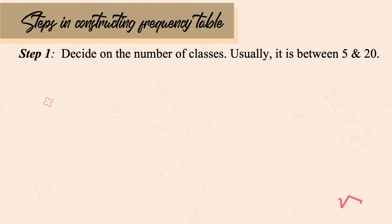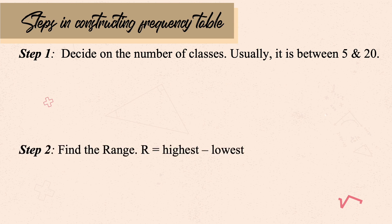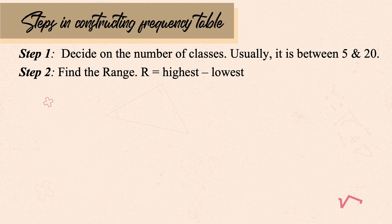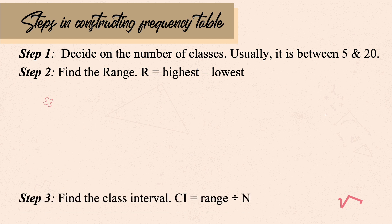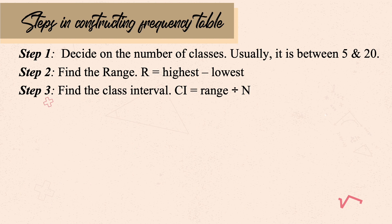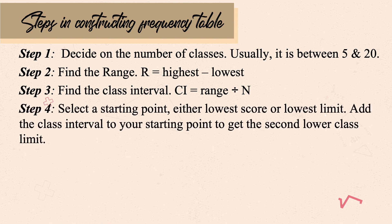Step 1: Decide on the number of classes. Step 2: Find the range using the formula R equals highest minus lowest datum. Step 3: Find the class interval using the formula range divided by n, where n is the number of classes from step 1. Step 4: Select a starting point — usually the lowest datum — and use the class interval to determine the next classes.